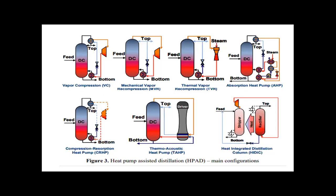AHP uses five heat exchangers, giving it a very high installation cost and therefore a long payback period. If the industry can afford the initial investment and requires refrigeration, then AHP is suitable; otherwise other technologies should be considered. The next is CRHP — Compression Resorption Heat Pump — also called a hybrid heat pump because it uses both compression and resorption. It is a recent approach to take advantage of thermochemical sorption forces.